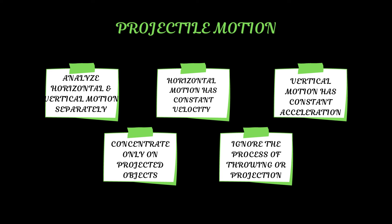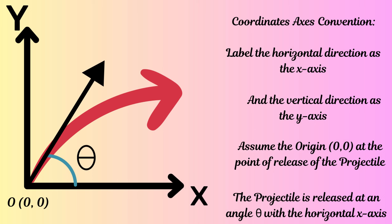This is how we define projectile motion. The usual convention for a two-dimensional plane is to take the horizontal direction as the x-axis and the vertical direction as the y-axis. For simplicity, we consider the initial coordinates at which the object was released as the origin, that is (0, 0).